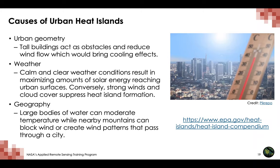An additional factor that influences urban heat island development, particularly at night, is urban geometry, which refers to the dimensions and spacing of buildings within a city. Urban geometry influences wind flow, energy absorption, and a surface's ability to emit long-wave radiation back to space. In general, urban heat islands form during periods of calm winds and clear skies because these conditions maximize solar energy reaching urban surfaces and minimize heat convected away. Conversely, strong winds and cloud cover suppress urban heat islands. The geographic location of a city will also be impacted by climate and topography — large bodies of water can moderate temperature, while nearby mountains can block wind or create wind patterns that pass through a city.